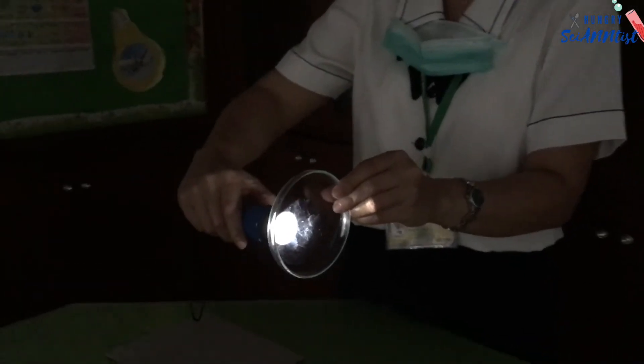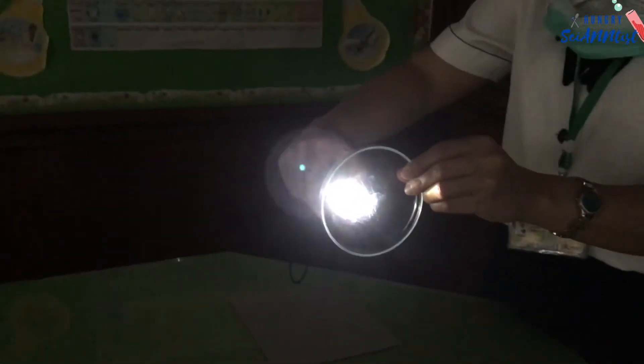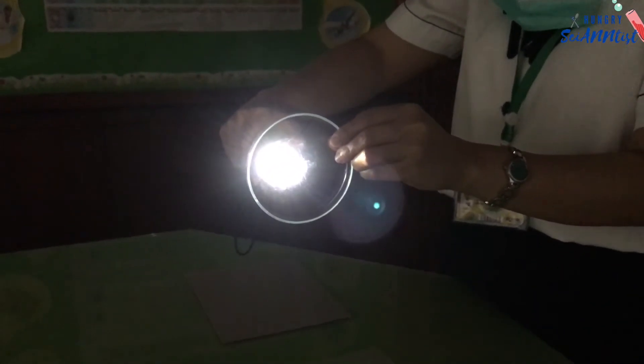Transparent objects do not cast shadows because they do not block light.